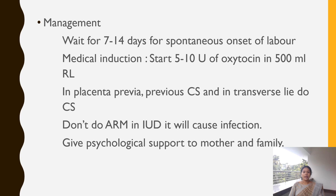For medical induction, you can give 5 to 10 units of oxytocin in 500 ml of Ringer's lactate solution. If placenta previa is present, if the mother has a previous history of cesarean section, or if the lie is transverse, then cesarean section should be considered. In the case of intrauterine death, you should not perform surgical induction — if artificial rupture of membranes is done, the chance for infection is higher, so ARM should not be performed. Psychological support must be given to the mother and family.